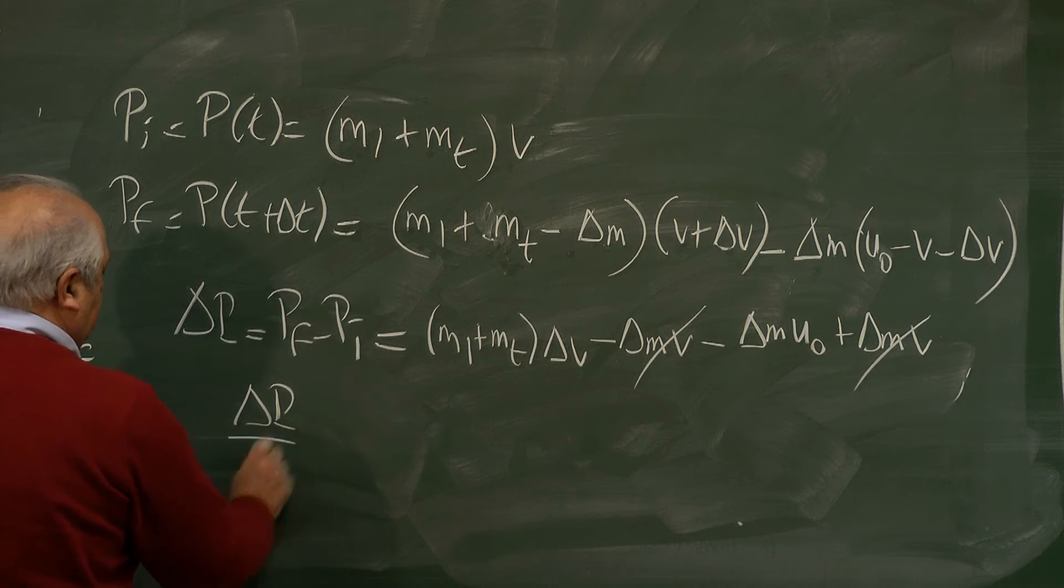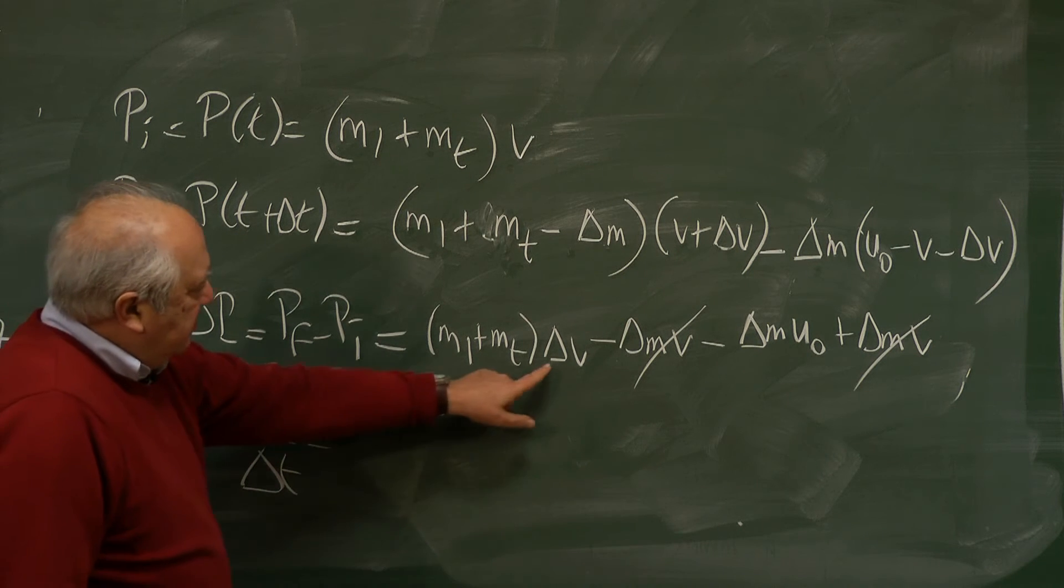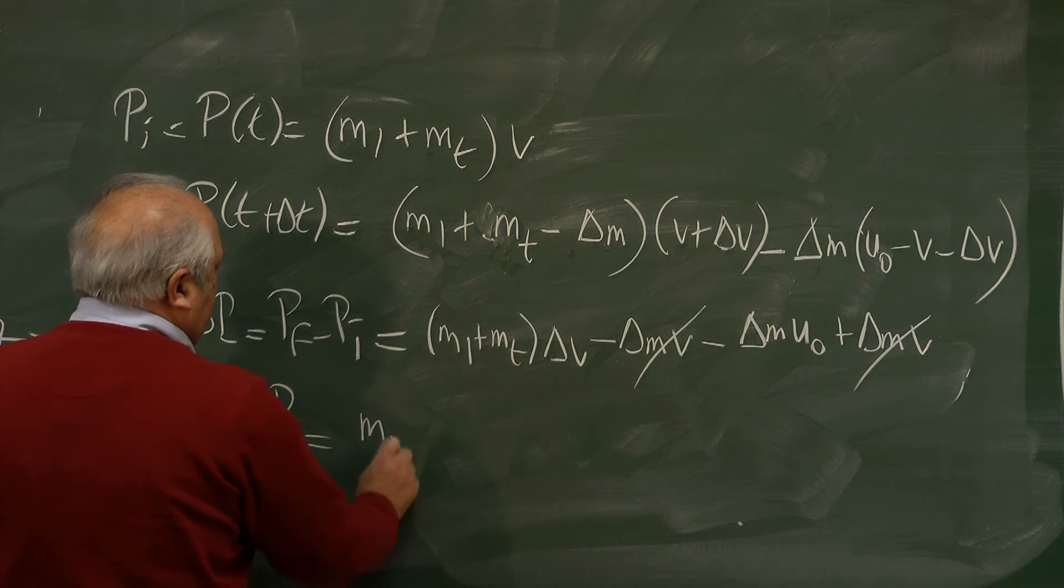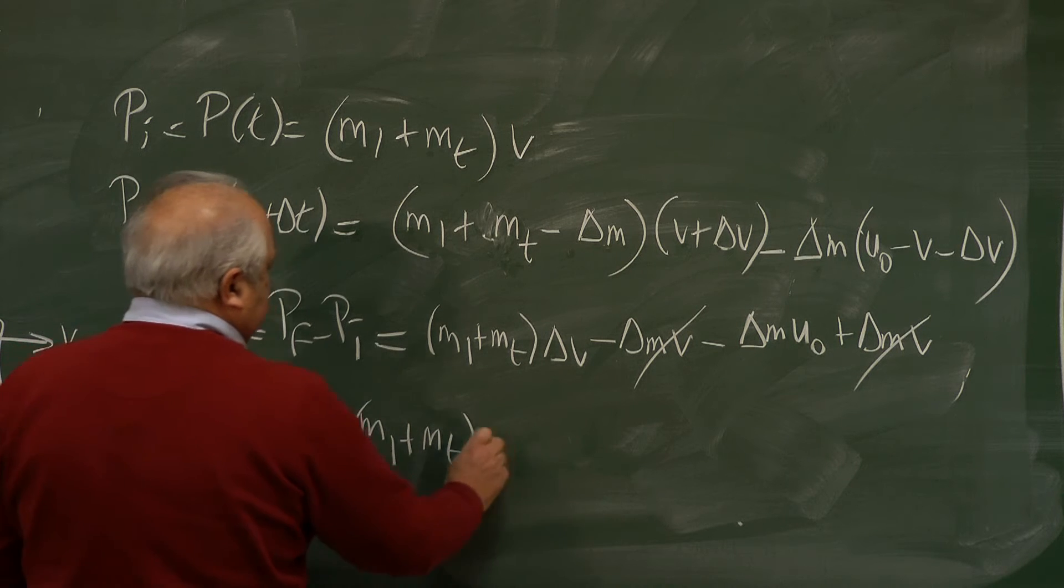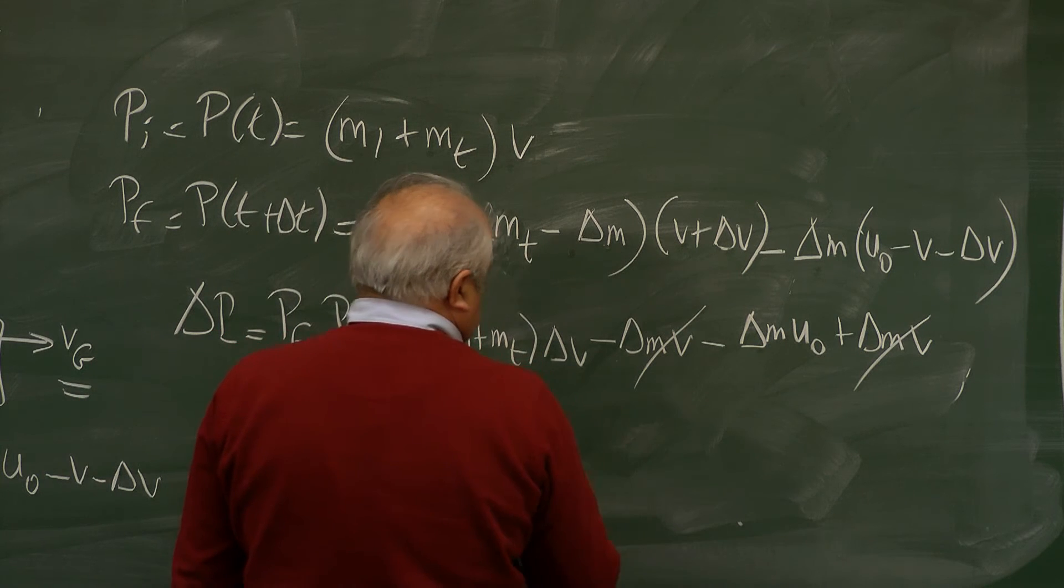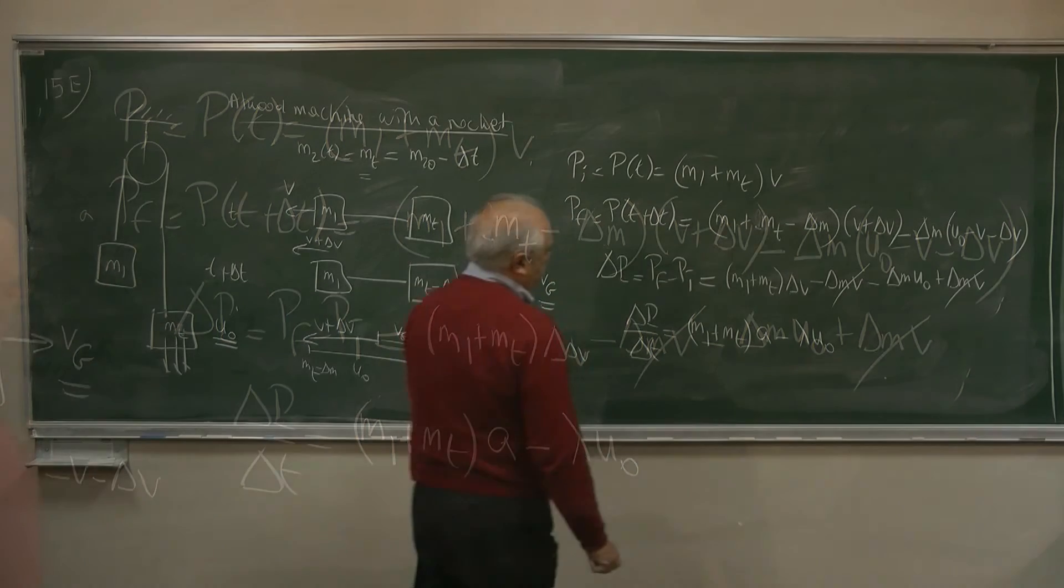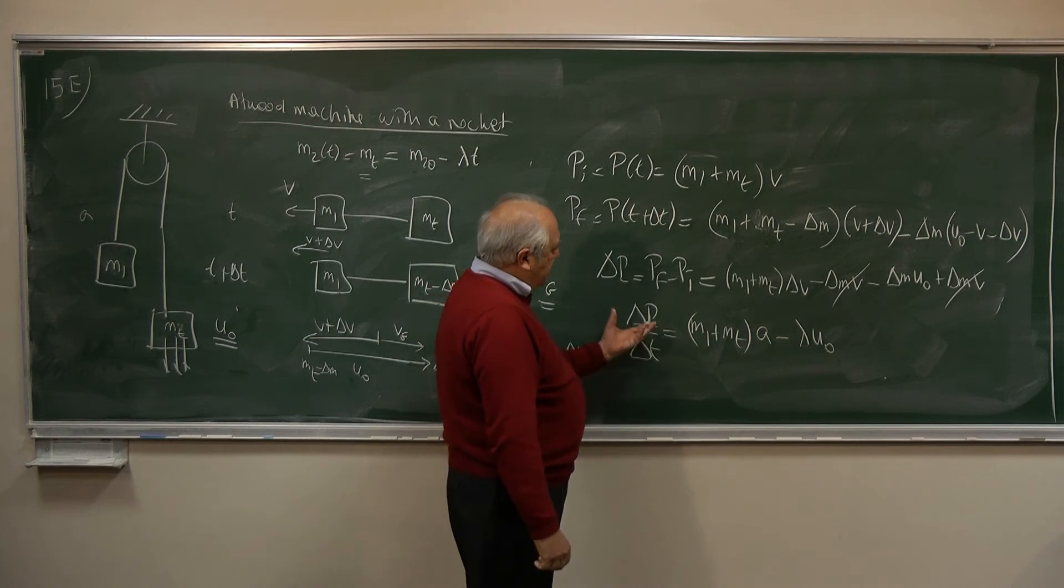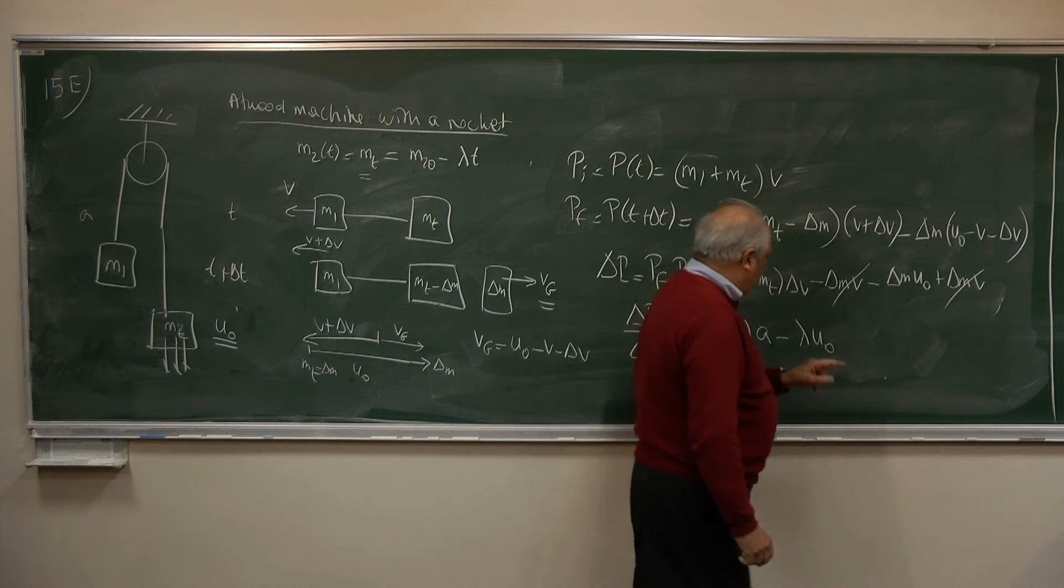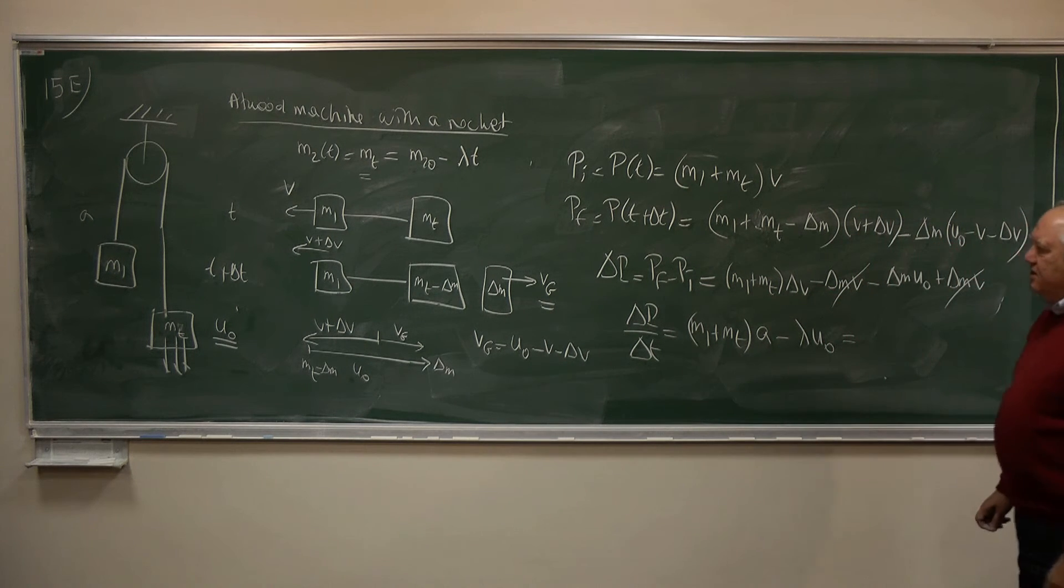Delta P, delta T is the force acting on the system. If I divide by delta T, that's acceleration. So it is M1 plus MT times acceleration minus delta M, delta T is lambda U zero. That's the change in the momentum per unit time. We have this factor here entering. And this will be equal to the net force on the system.